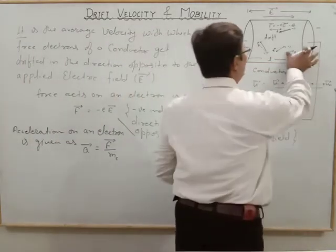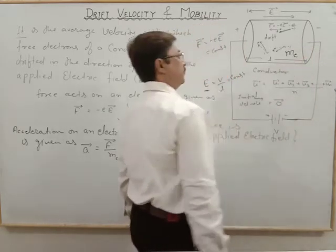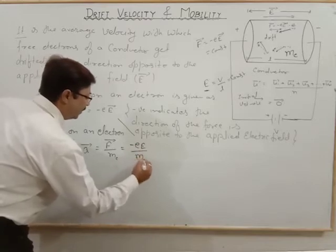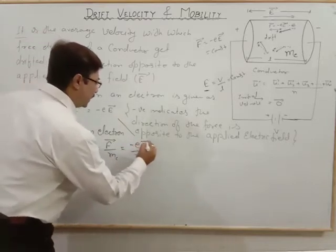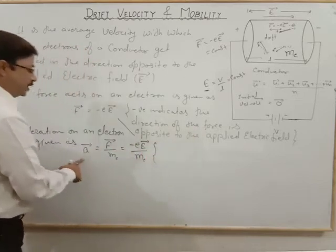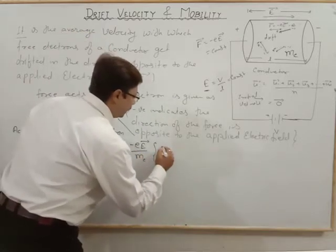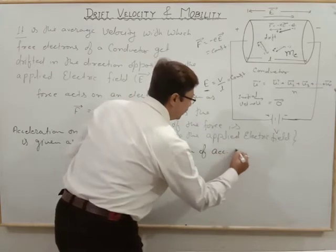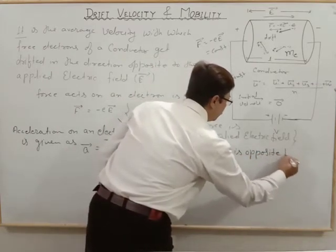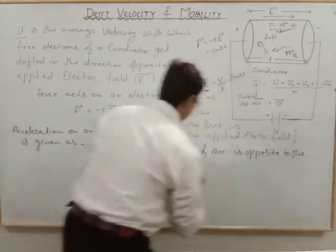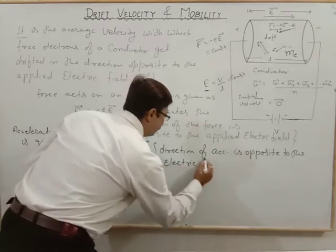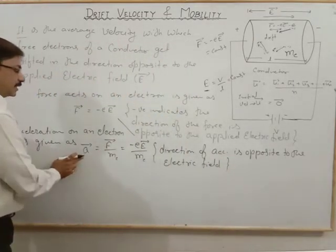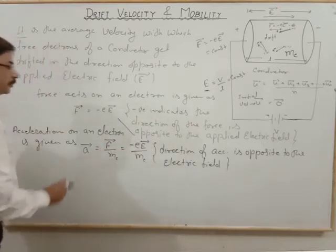So acceleration a vector equals minus eE by m_e, into the electric field. Here also we get a negative sign, meaning the direction of the acceleration is opposite to the applied electric field. So acceleration is also in the negative direction of the electric field.